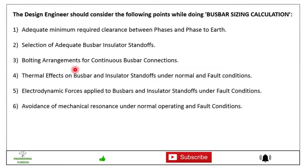And then bolting arrangement for continuous busbar connections, that means whether it is M6 bolt or M8 bolt and number of bolts, two number of bolts or three number of bolts. Then fourth one is thermal effects on the busbar and insulator standoffs under the normal and fault conditions. Then fifth is the electrodynamic forces applied to the busbars and insulator standoffs under the fault conditions.